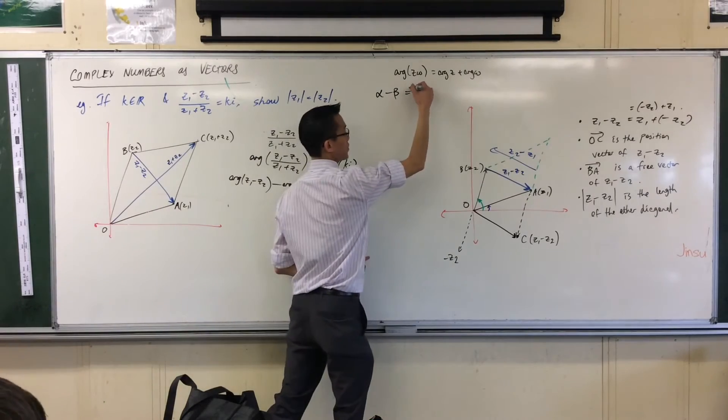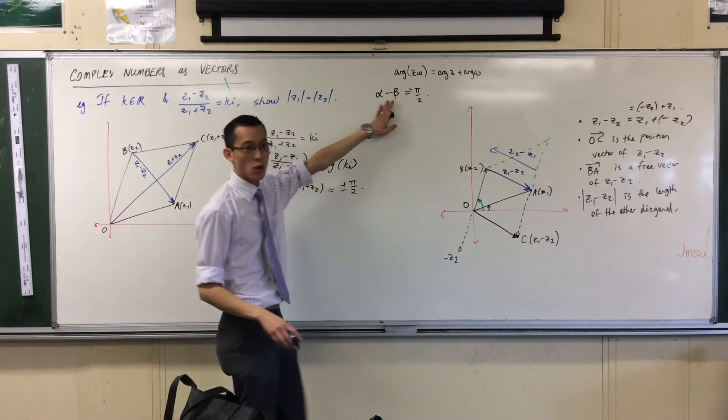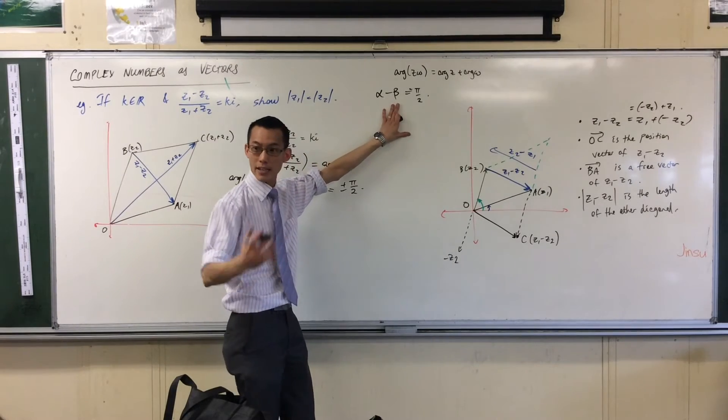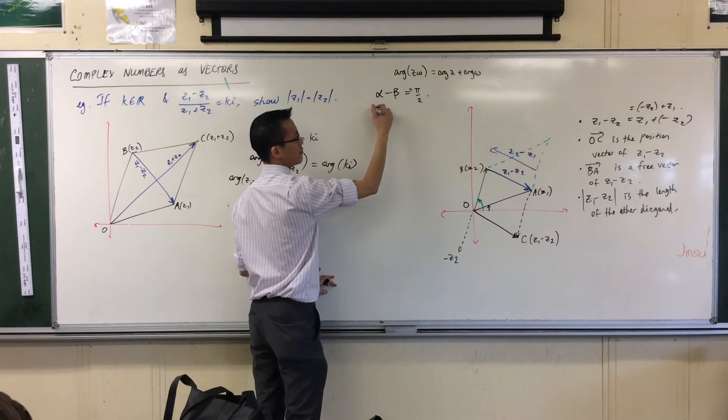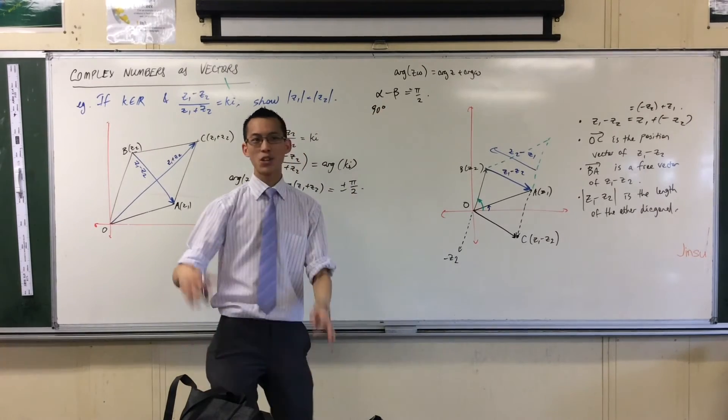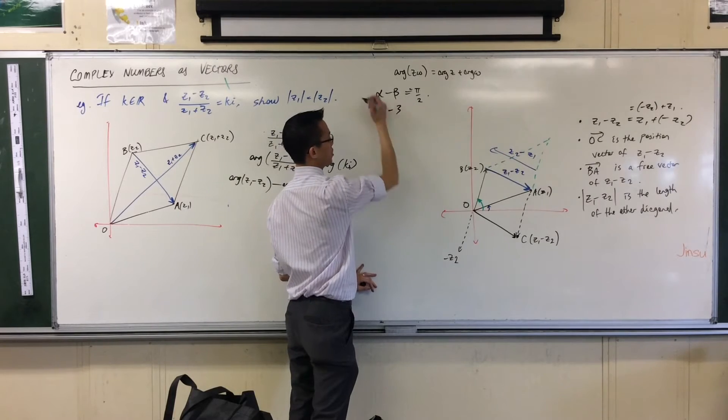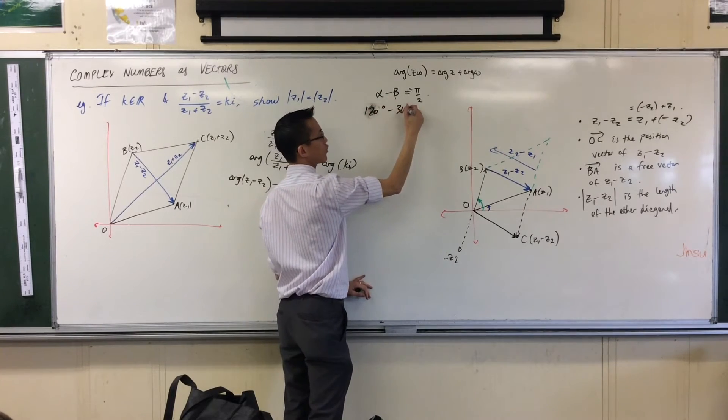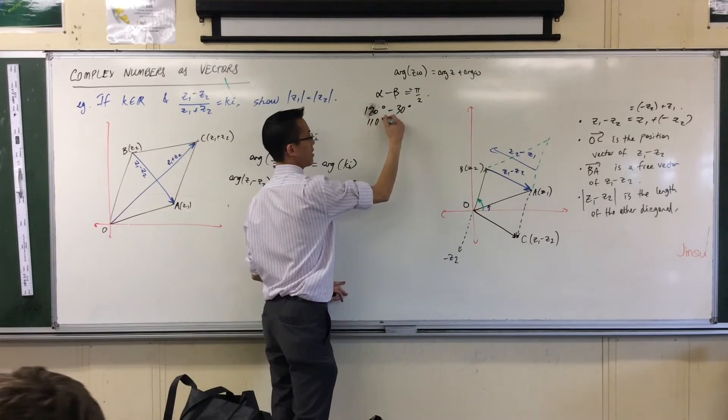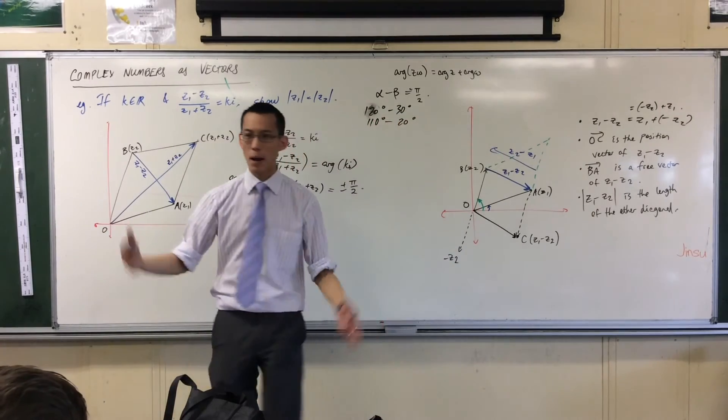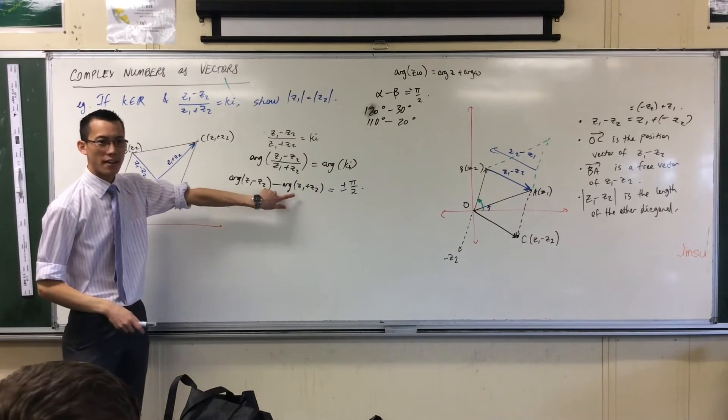Don't forget I could have a negative as well, but it's the same thing. What I mean is that they're 90 degrees, pi on two radians, apart from each other. For instance, one might be 120 and one could be 30, or maybe one could be 110 and one could be 20. They're off by 90 degrees.